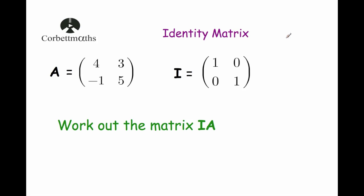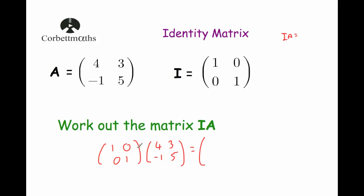Interestingly, normally when you multiply matrices together the order is important. So let's see what happens when we multiply I times A. I = [[1, 0], [0, 1]] multiplied by A = [[4, 3], [-1, 5]]. First row times first column: 1 times 4 is 4, plus 0 times minus 1 is 0, giving 4. First row times second column: 1 times 3 is 3, plus 0 times 5 is 0, giving 3. Second row times first column: 0 times 4 is 0, plus 1 times minus 1 is minus 1. Second row times second column: 0 times 3 is 0, plus 1 times 5 is 5. Again, we've got the matrix A. So it doesn't matter which way around you multiply the identity matrix with a matrix — you'll always get that same matrix.